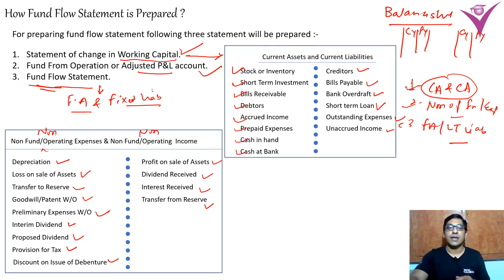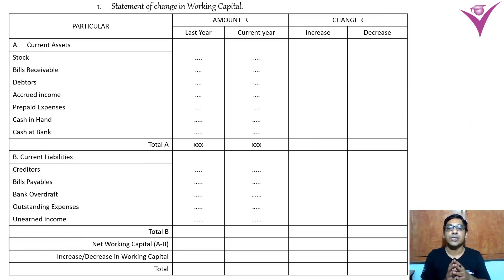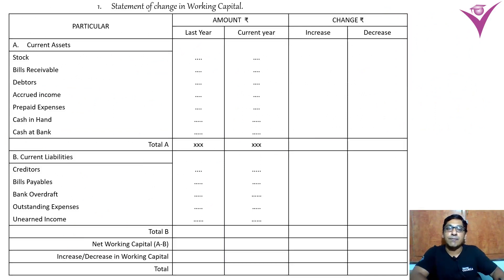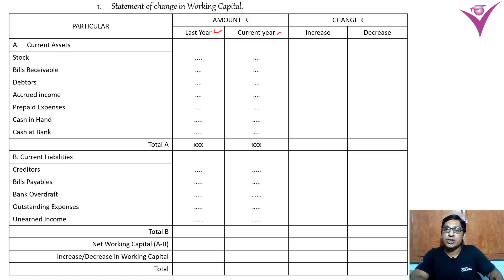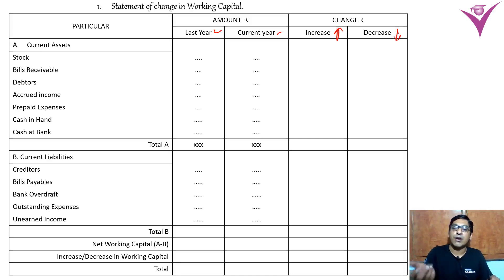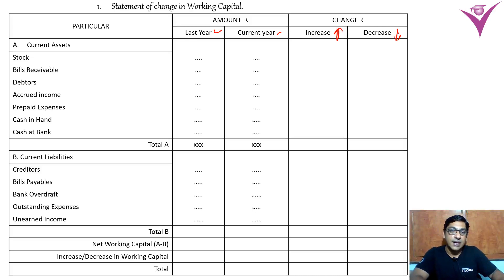Now let's see how the statement of change in working capital is prepared. The format has: particular, then amount for last year and current year, and then change — increase and decrease. We list all the current assets: stock, bills receivable, debtors, accrued income, prepaid expenses, cash in hand, and cash at bank.